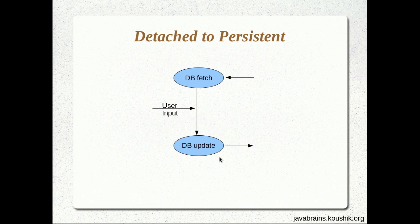Now I wait for the user input. The user makes an input, I have the updated value, and now I need to save it back to the session — which means I need to have this object back to a persistent state again. How do I move an object from the detached state to a persistent state? Once I make this object back to a persistent state with the user input, updation is as simple as setting the properties of the persistent object. But how do I move it from detached to persistent? That's what we're going to look at now.